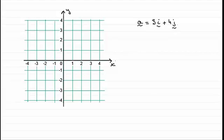Well, it would look something like this. Three units in the i direction, four units in the j direction.